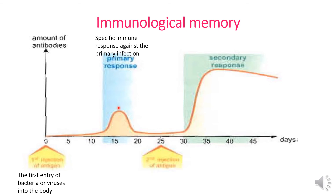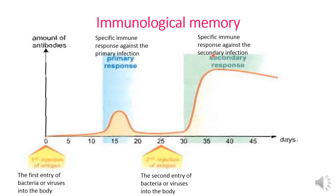The primary response is the response against the first infection. B lymphocytes secrete a moderate amount of antibodies for a short period of time. When the body is infected a second time by the same bacteria or viruses, the B lymphocyte takes only five days to secrete antibodies, and secretes a much larger amount during the secondary response, which lasts a longer time.